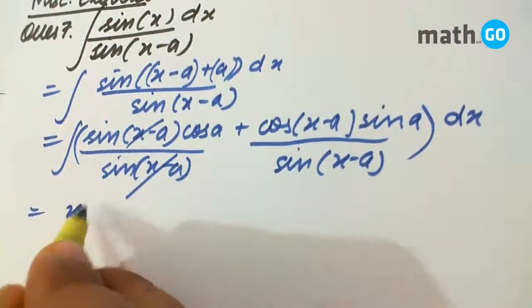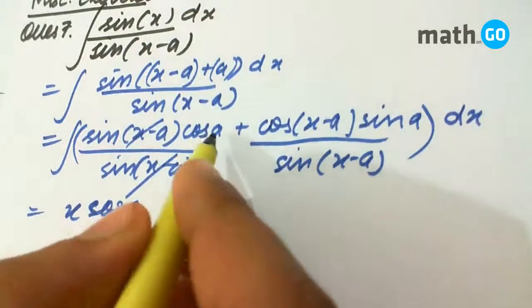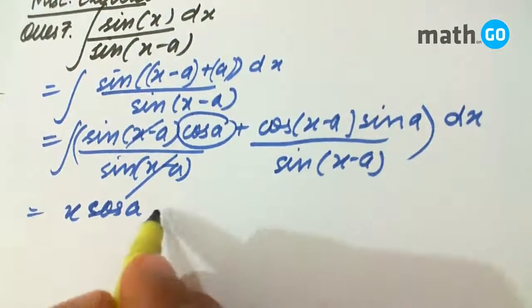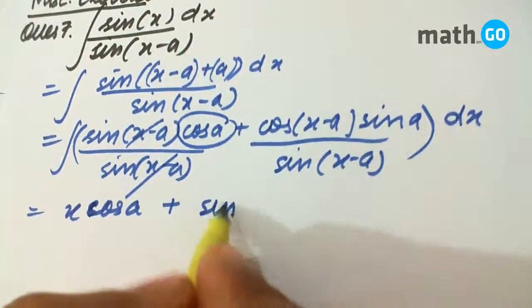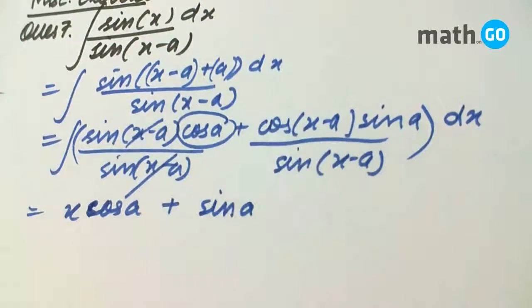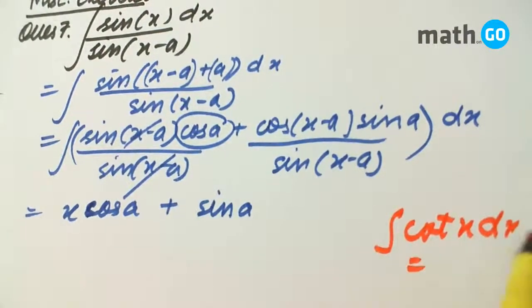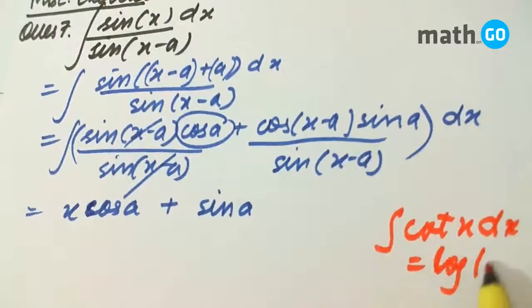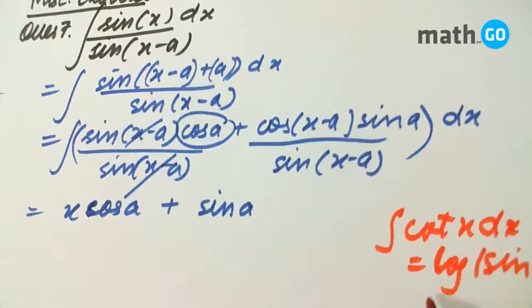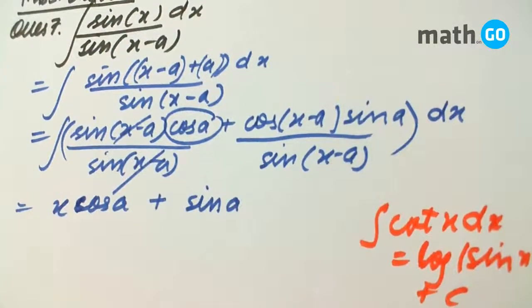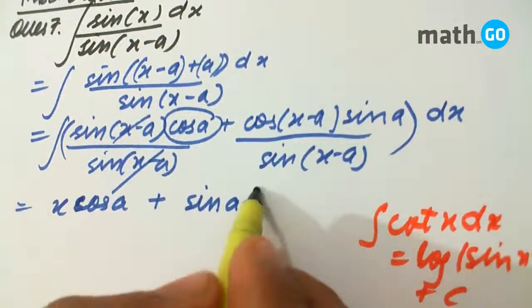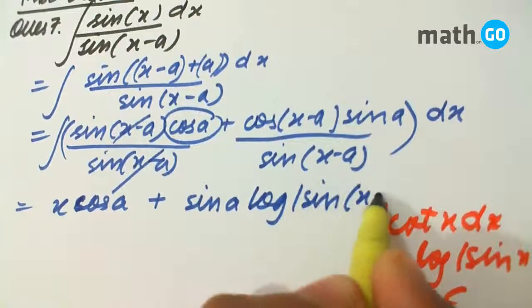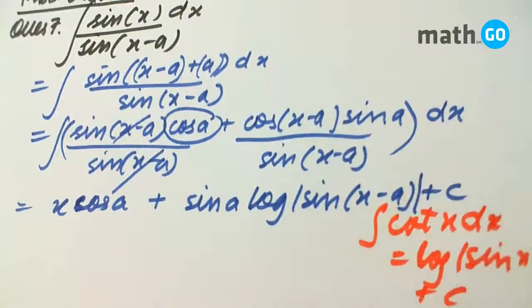So on integrating we simply get x cos a. Cos a is a constant, so simply the integral of cot(x-a) becomes log of sin(x-a) plus c.